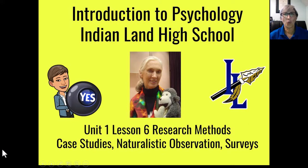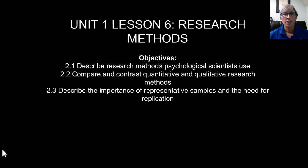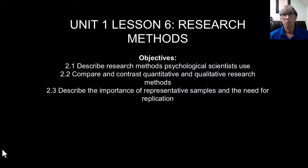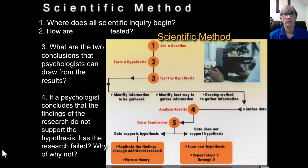Hi students. This is Unit 1, Lesson 6: Research Methods — Case Studies, Naturalistic Observations, and Some Surveys. In this lesson, we want to look at research methods that psychologists use, compare and contrast those methods, the disadvantages and advantages of them, and describe the importance of representative samples and the need for replication in surveys.